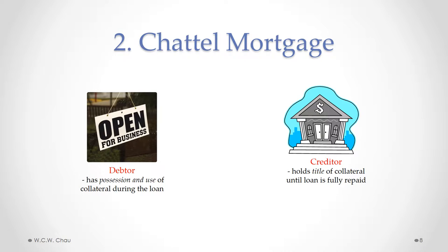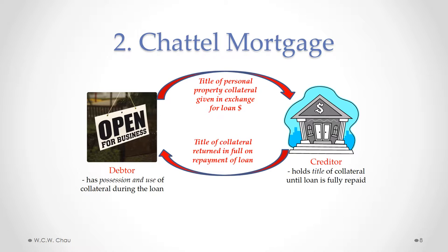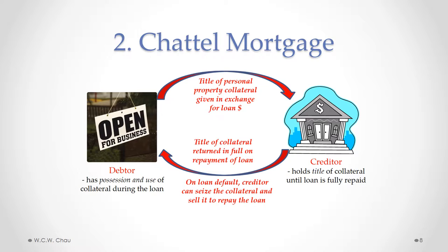Here's the general explanation of a chattel mortgage. The title of the personal property being used as collateral is given by the debtor to the creditor in exchange for the loan money. When the loan is fully repaid, that title is returned by the creditor to the debtor. If there's a loan default, the creditor can seize the collateral — a repossession or repo — and sell it to repay the loan.